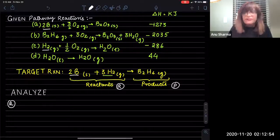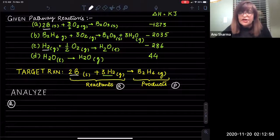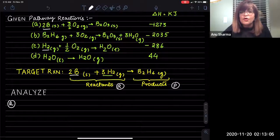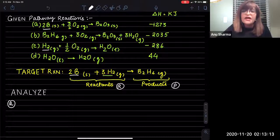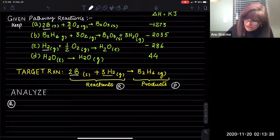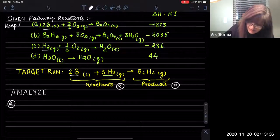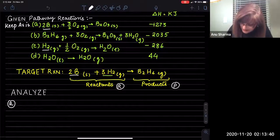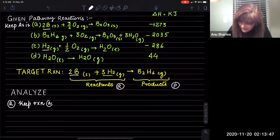Pathway reaction number one — what are we going to do with that? First, we are going to match whether the reactants or products are on the same side of the equation. We need two borons to be on the reactant side, and the pathway reaction is also showing that two borons are on the reactant side. We don't have the oxygens or B₂O₃ to compare, but two borons is good enough. Therefore, we are going to keep this equation as is — do not change it.